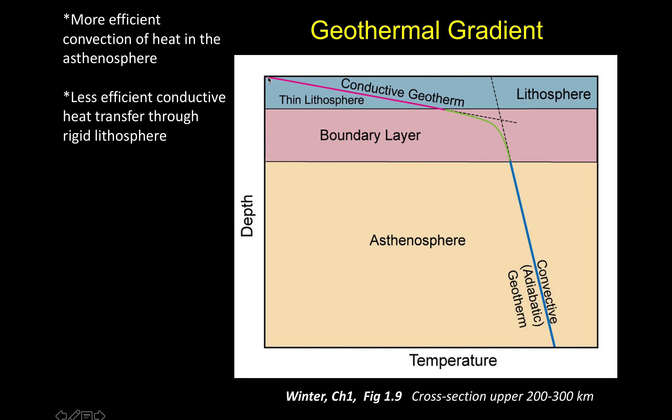In the lithosphere, we can have adjacent atoms and molecules pass their vibrational or heat energy, but the atoms and molecules themselves are not moving. So in the lithosphere, conduction is the way that heat flows, and our temperature is going to change with a slope that creates a really large temperature increase over a rather short distance increase.